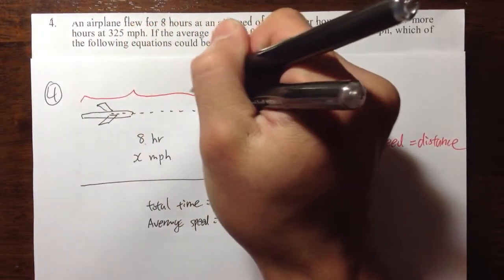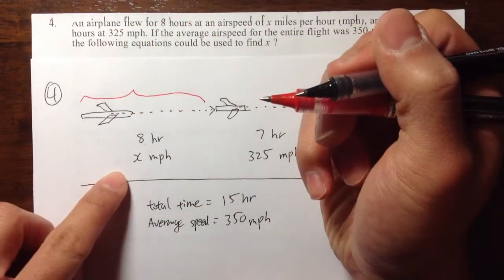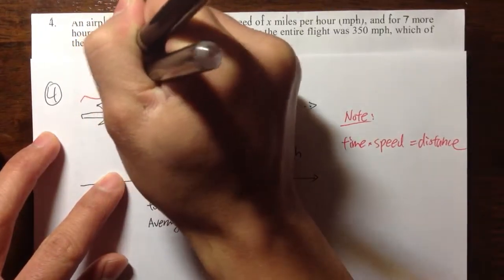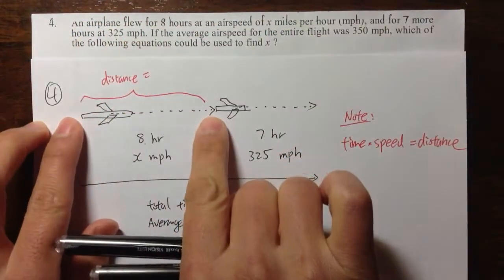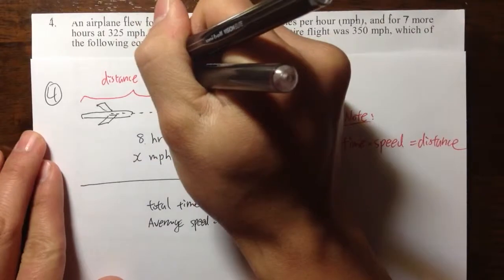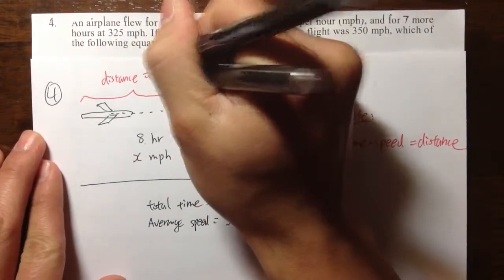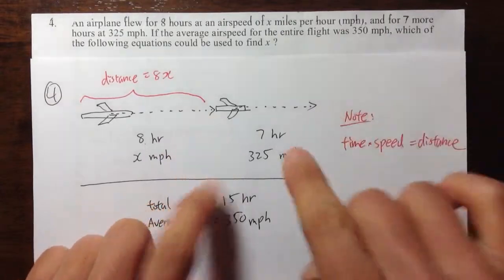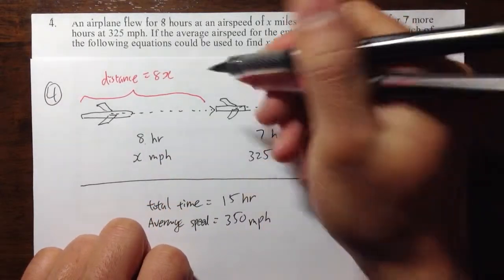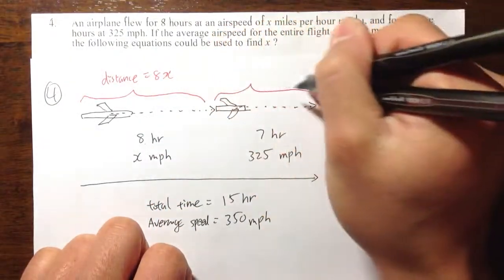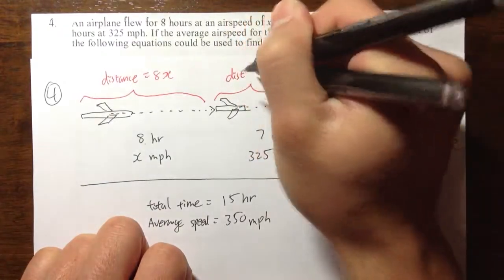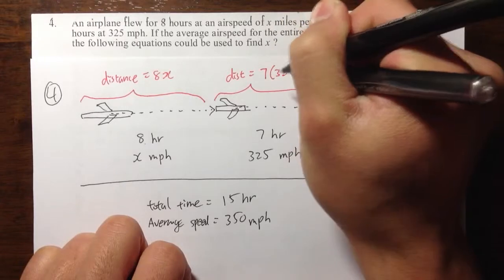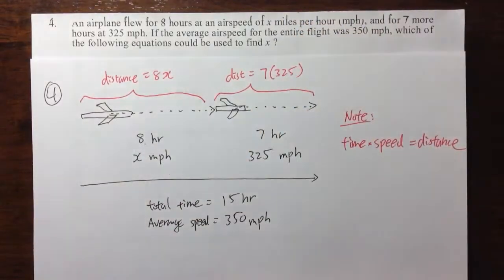So for the first part, if we multiply 8 and x together, then that will be the distance. The distance for the first trip, it will be 8x miles. And for the second part of the trip, it'll be 7 times 325. So again, this part will be the distance is equal to 7, and let me use the parentheses for multiplication, 7 times 325.